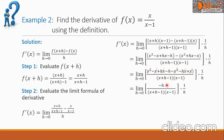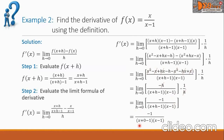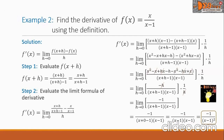The negative h in the numerator and the h in the denominator cancel each other. Rewriting in simplified form, we have negative 1 over the product of the two denominators. Evaluating the limit as h approaches 0, we substitute 0 for h and the final answer is negative 1 over x minus 1 squared — this is the derivative of our function.